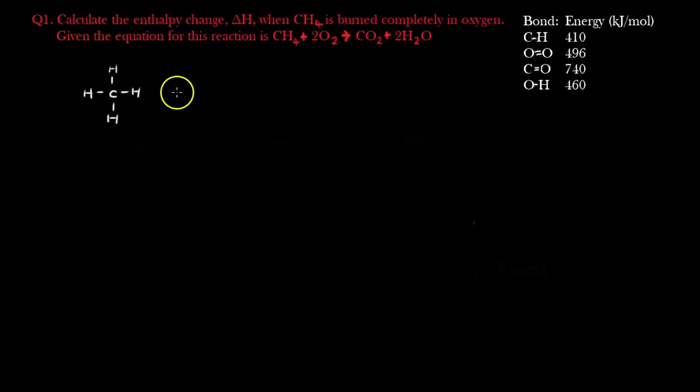So CH4 is written as such. O2, there are 2 units of it, so we have to draw 2 O2s. So OO and OO because there are 2 units of it. To give us the products of 1 unit of CO2 drawn as such, and 2 units of H2O which is drawn as such, H2O and H2O, 2 units of it.